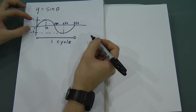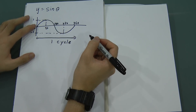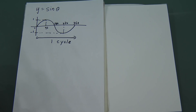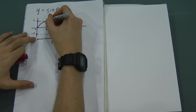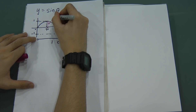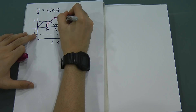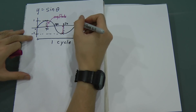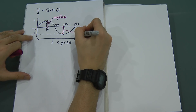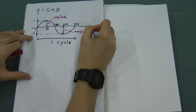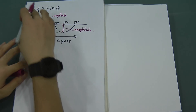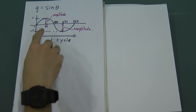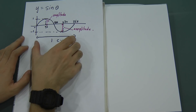The maximum value is 1 and minimum value is negative 1. From here to here, we call it amplitude. This distance from 0 to negative 1 is also called amplitude. From 0 until 360, this is normally called one cycle.